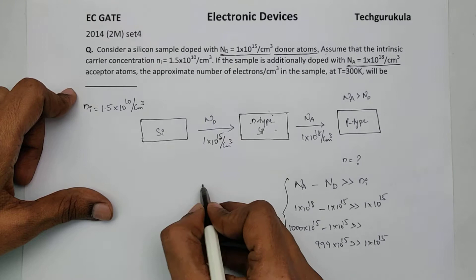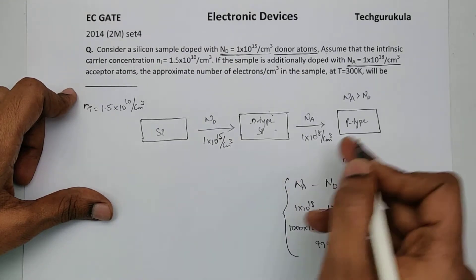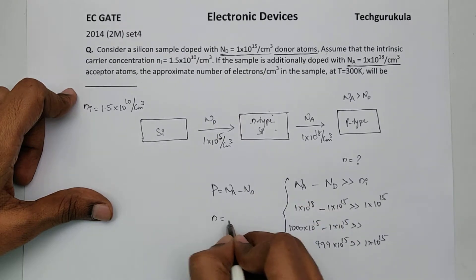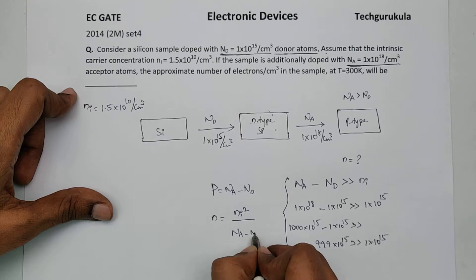When this condition is satisfied, we have a formula. This is p-type semiconductor where P is given by Na minus Nd, and N is given by Ni square over Na minus Nd.